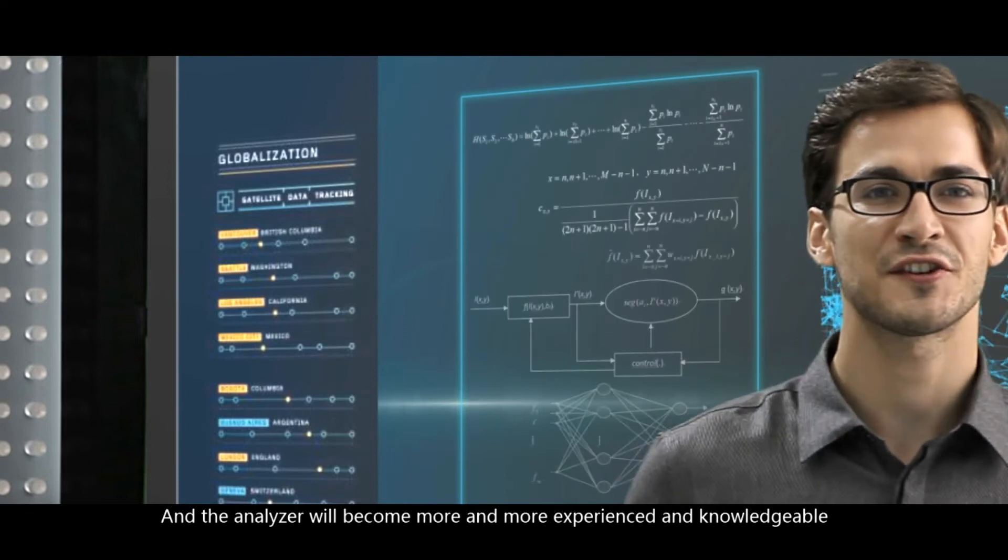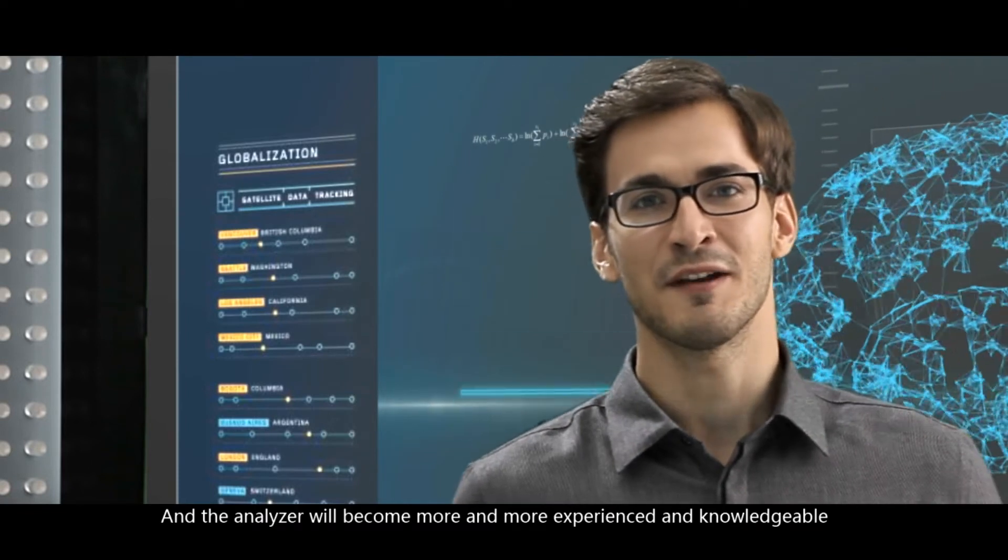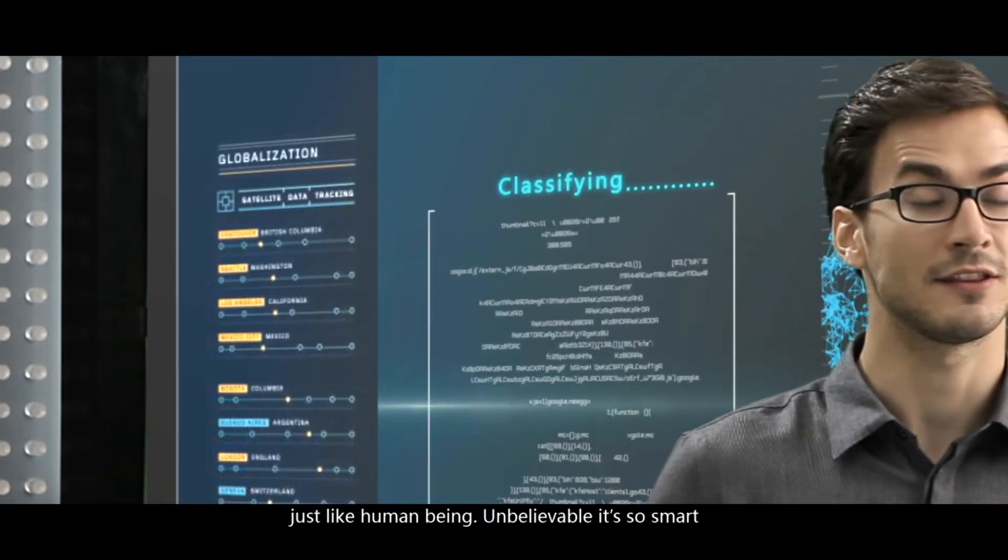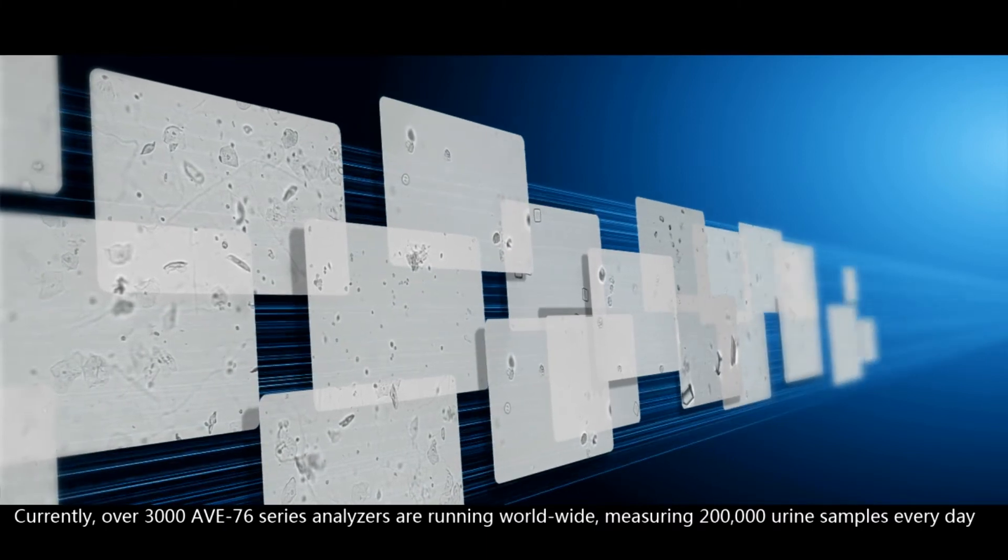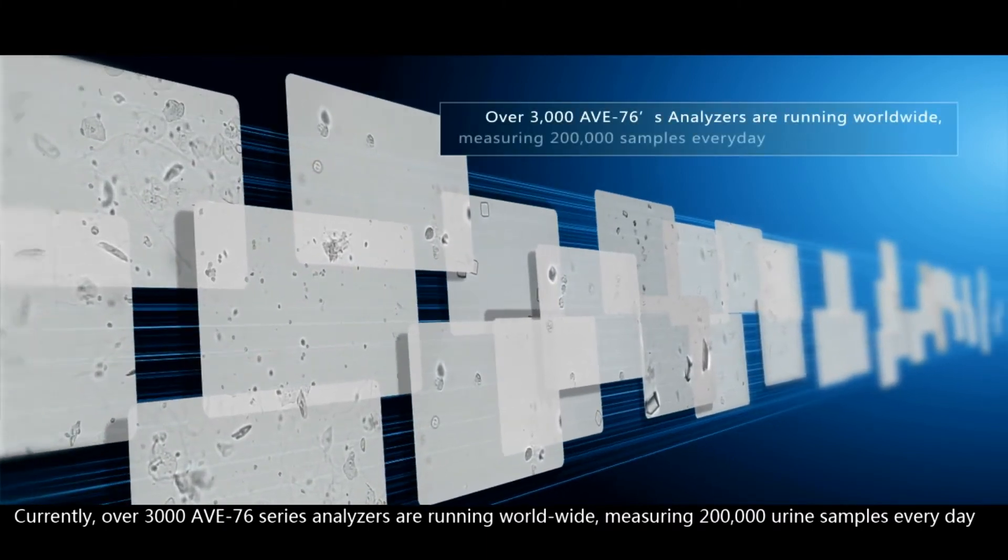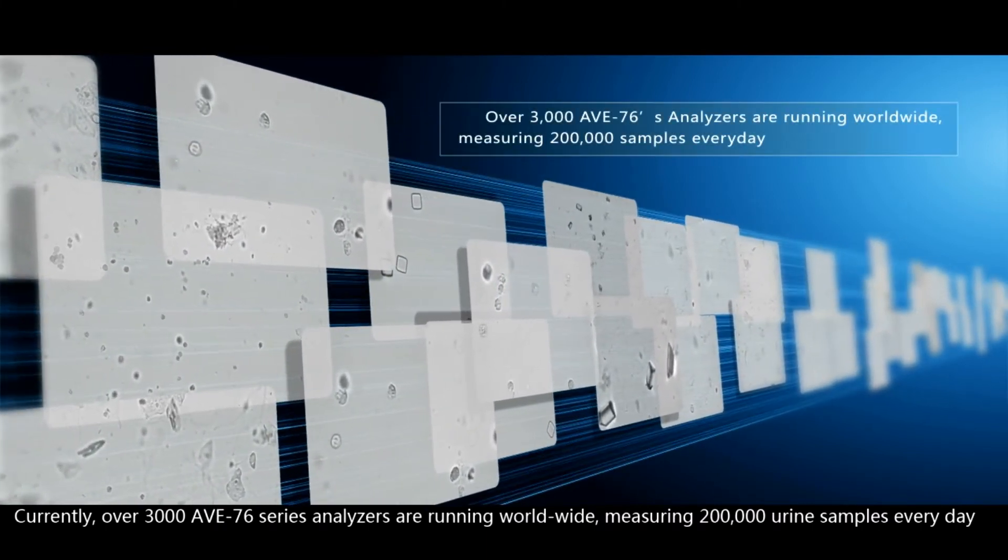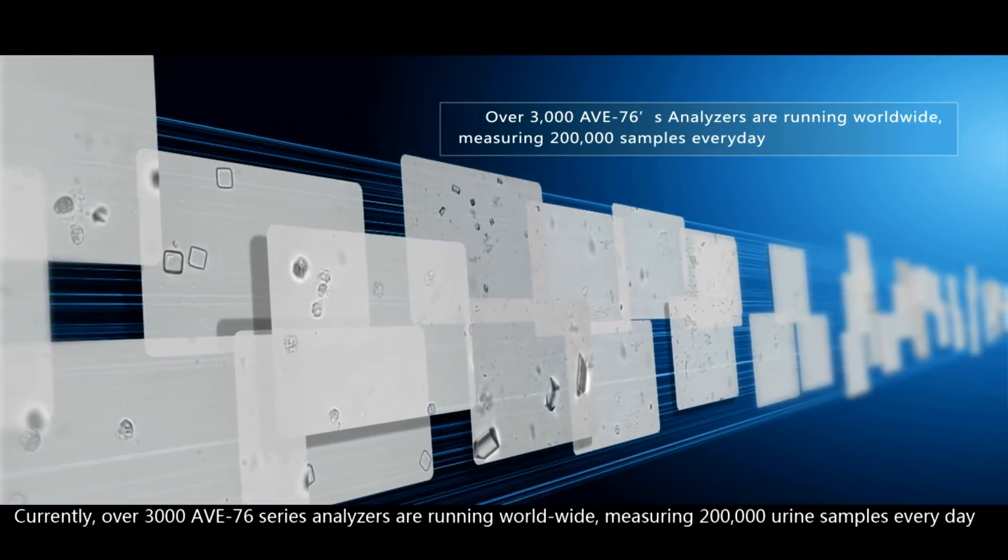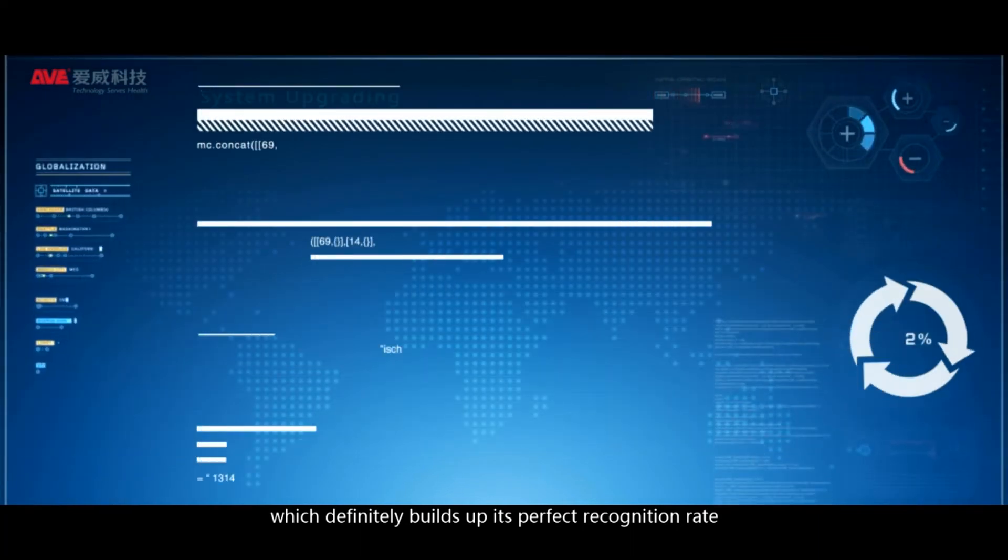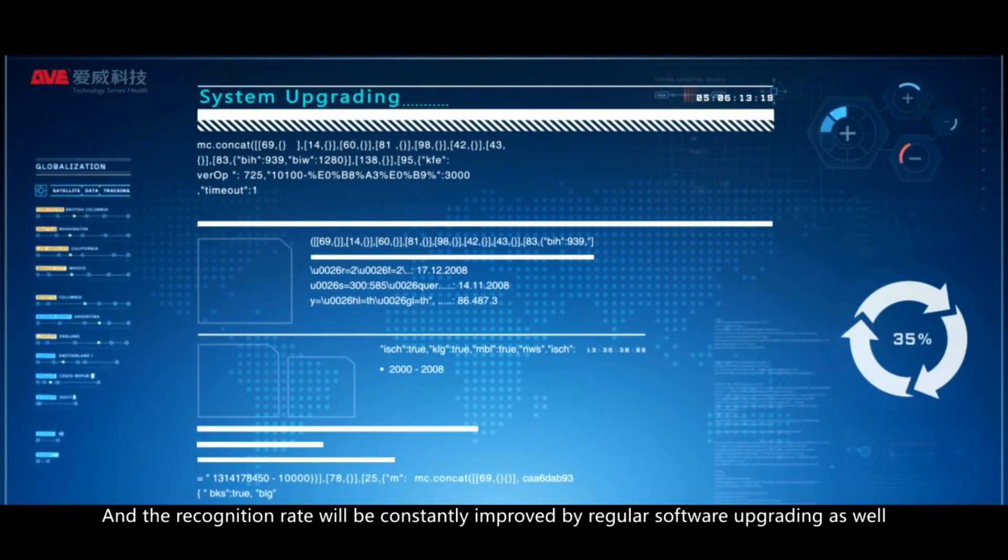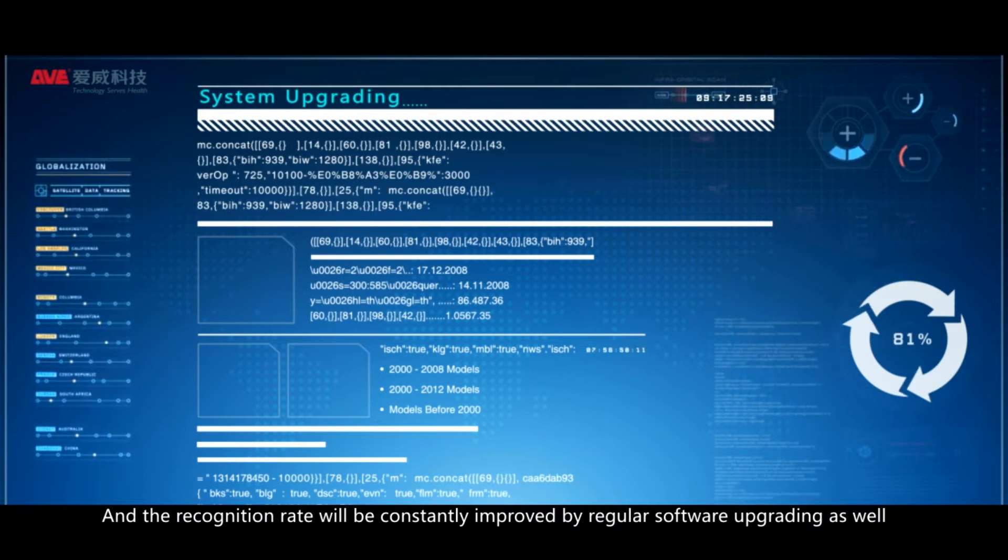And the analyzer will become more and more experienced and knowledgeable, just like a human being. Unbelievable! It's so smart! Over 3,000 AVI-76 series analyzers are running worldwide, measuring 200,000 urine samples every day, which definitely builds up its perfect recognition rate. And the recognition rate will be constantly improved by regular software upgrading as well.